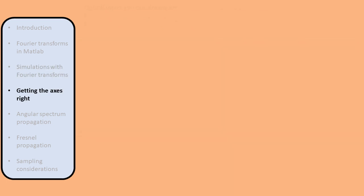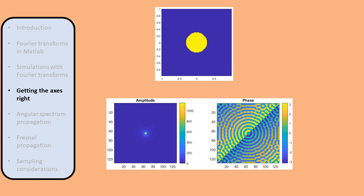We now know how to get the Fourier transform to look right and can use it to meaningfully study several topics. But to quantitatively simulate the propagation of fields, we still need to figure out the axes with which we are plotting the Fourier transform. When we define a matrix and take its Fourier transform, we get another matrix, but MATLAB cannot tell us the physical meaning of the pixels of the Fourier transform — it is up to us to specify exactly what we are calculating.